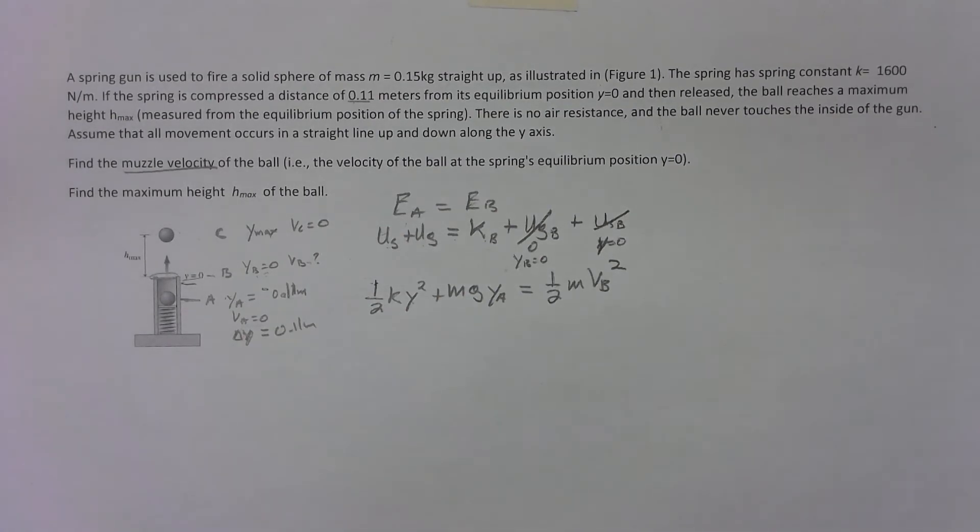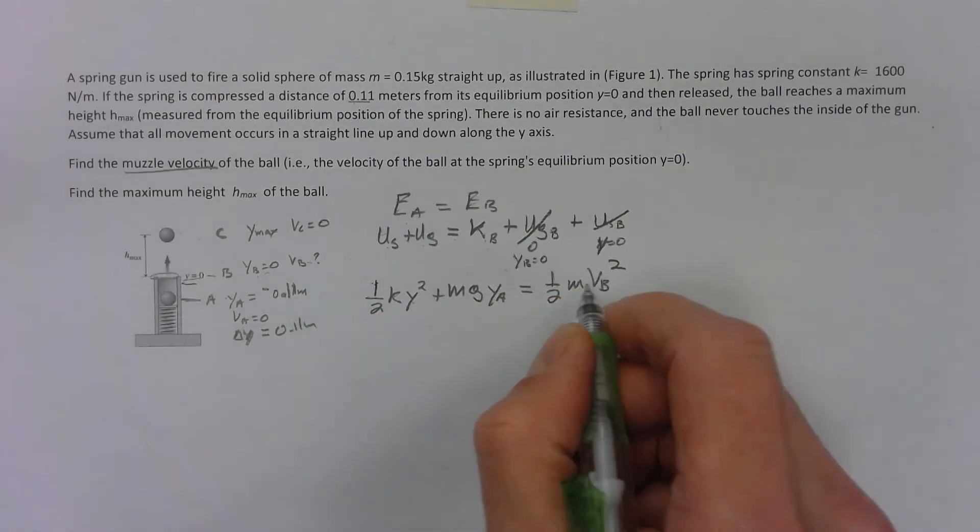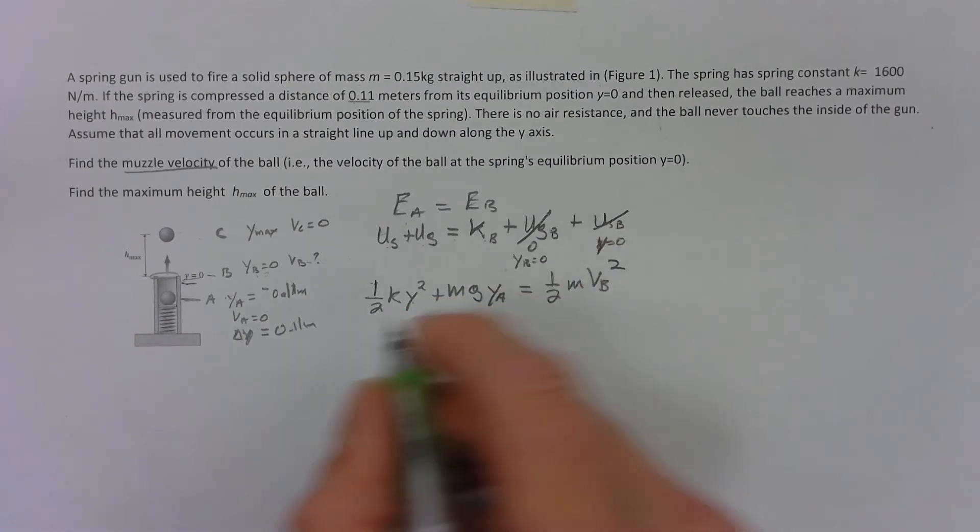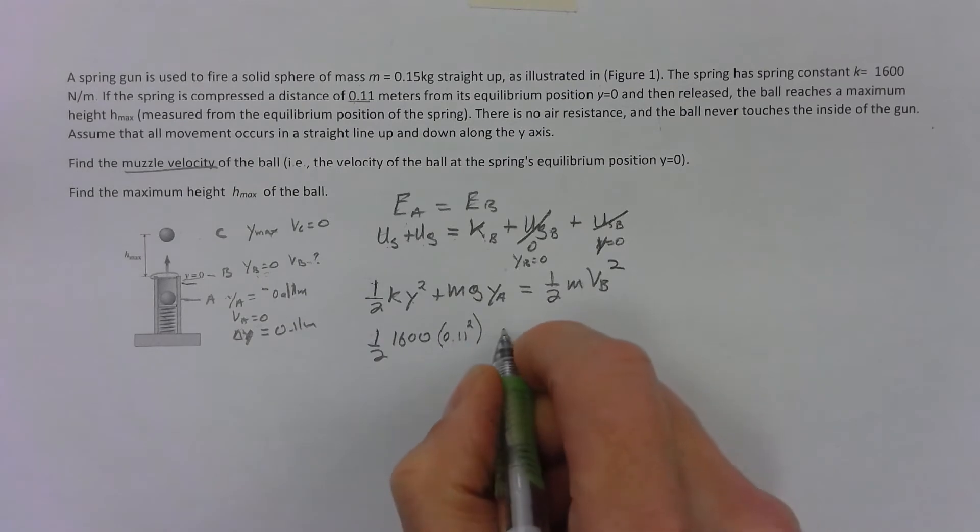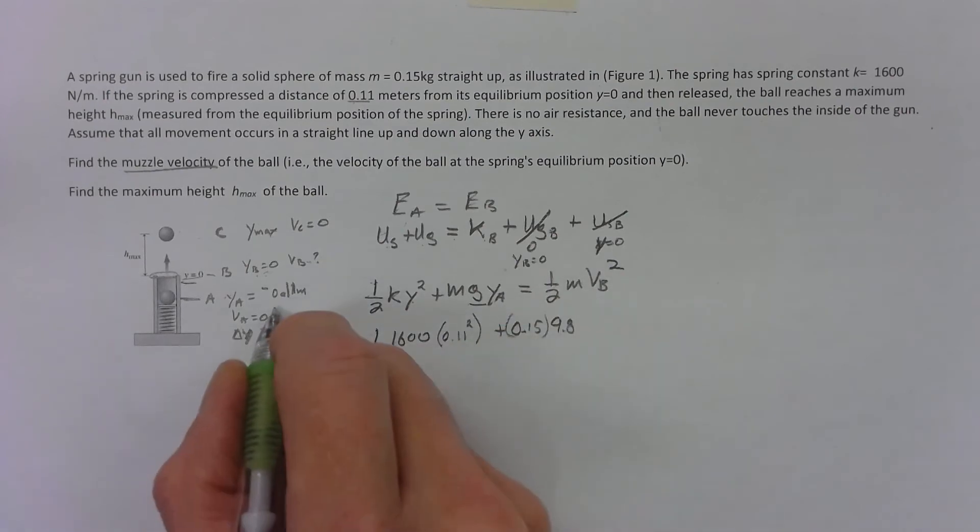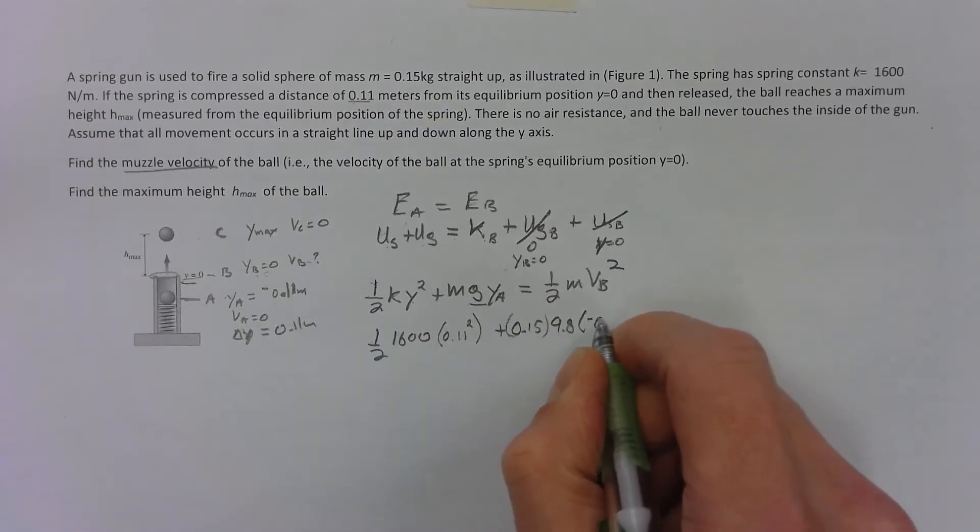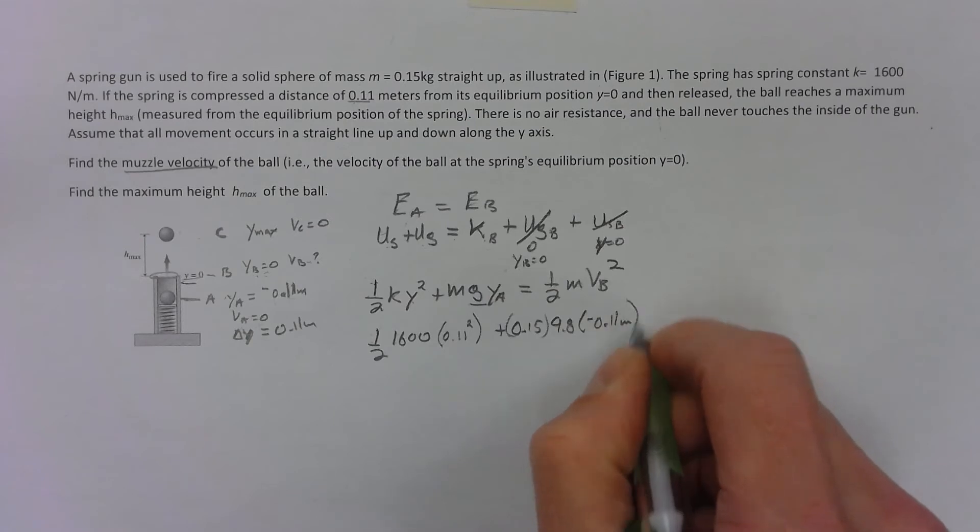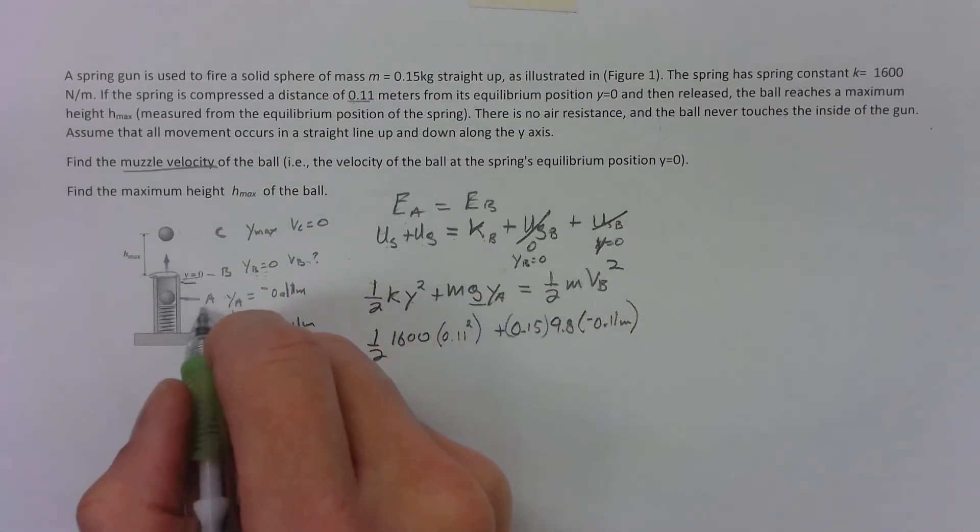We can move that half and that m to the other side, but I'm going to plug in the numbers first. We've got one half times 1600, make sure our units all match, it's newtons per meter, and 0.11 squared is the compression of the spring. Plus mass of this ball 0.15, acceleration due to gravity is 9.8, the height here is negative 0.11 meters because it's below our zero.